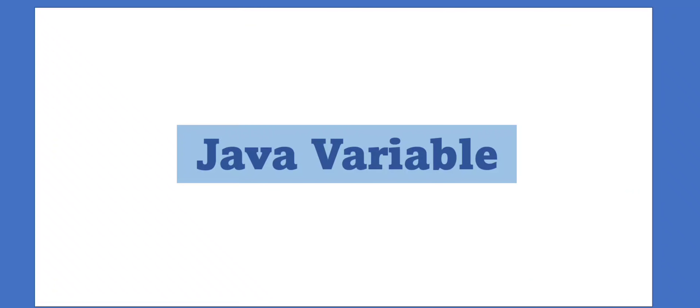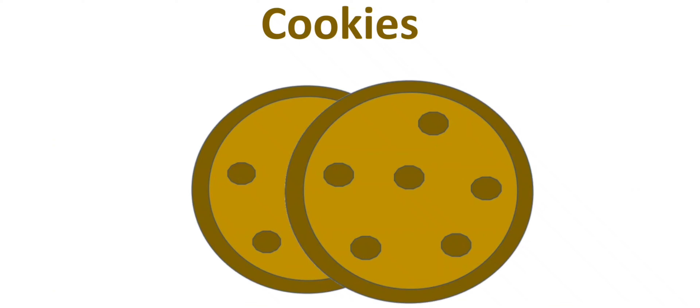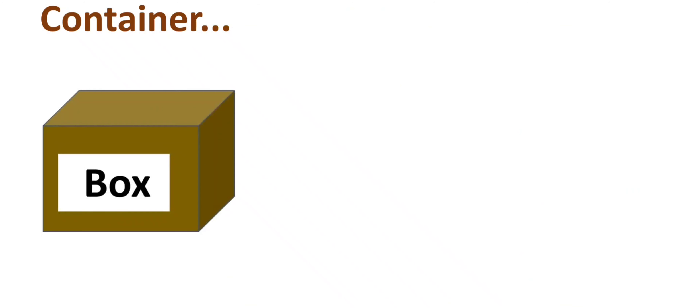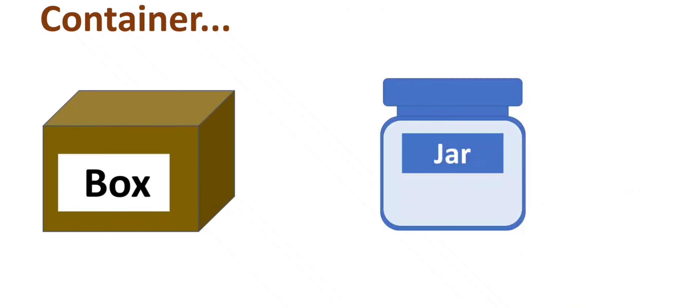Hello everyone, in this tutorial we are going to discuss the basic concept of a variable. So the question arises: what is a variable in Java? Now, let's imagine you have cookies and you want to store them — for that you need a container, which might be a box, a jar, or anything that we can store something in.